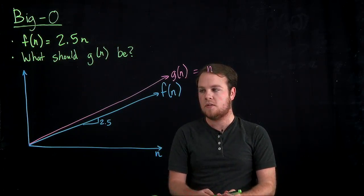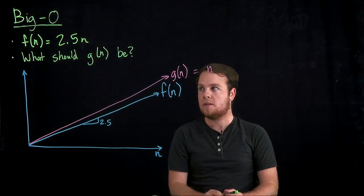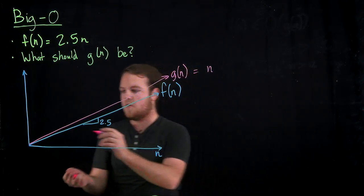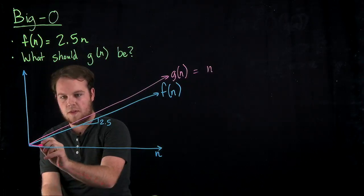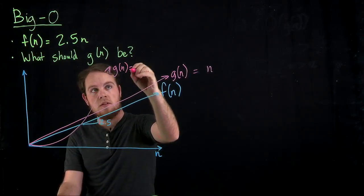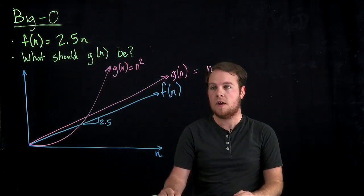And if we need to, we can multiply by any value we want to make it correct. There's also several other answers to this question. For instance, we could have also said that g of n is equal to n squared is also an upper bound of f of n.